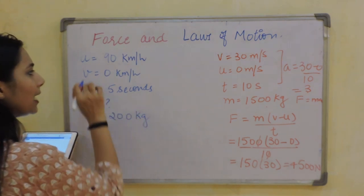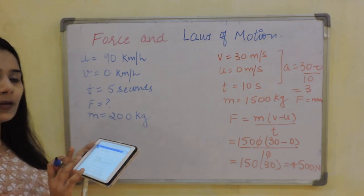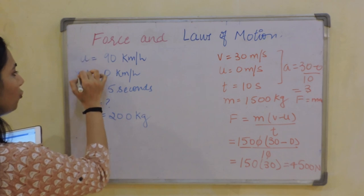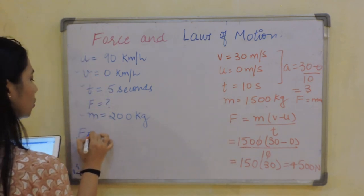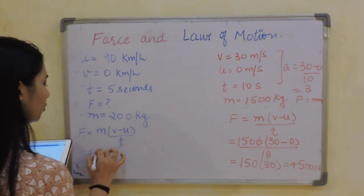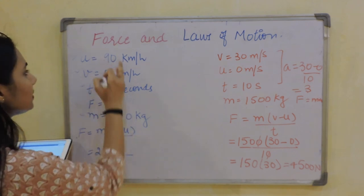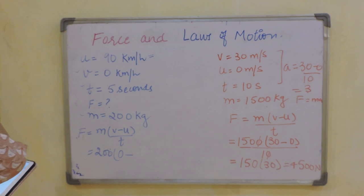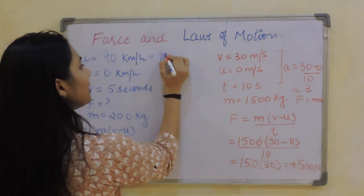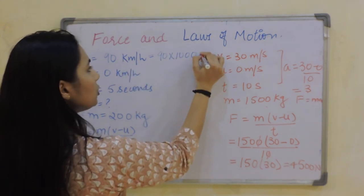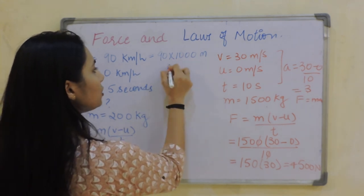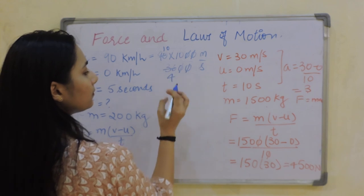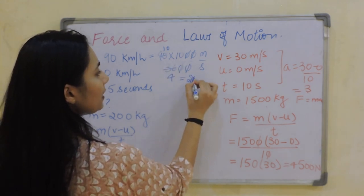Check the units — the velocity is in km/h, which needs to be converted to standard units. Converting 90 km/h: multiply by 1000 for km to m, and divide by 3600 for hours to seconds — giving 90 times 1000 divided by 3600. Two zeros cancel, leaving 900/36, which equals 25 m/s. The final velocity is 0 m/s.